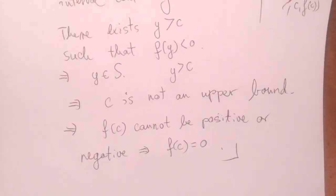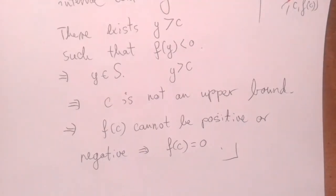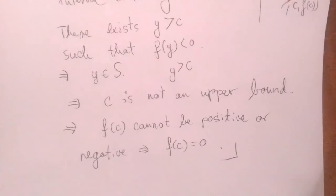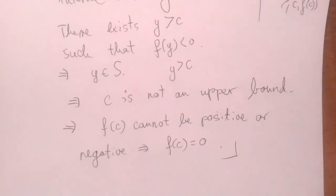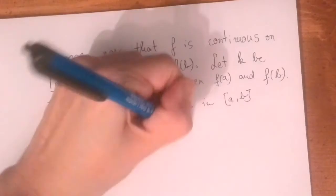With least upper bounds, there is this fine balance that we'll observe a lot: you have a least upper bound for a set, and if you move up you get an upper bound but not the least one, and if you move down, that's no longer an upper bound.